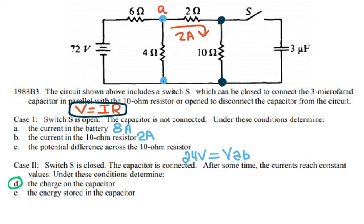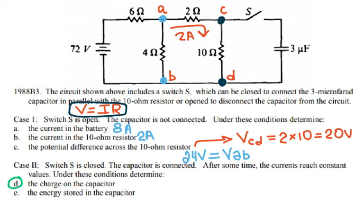Calling the capacitor terminals C and D, the voltage between C and D equals the voltage across the 10 ohm resistor, which is the current (2 amps) times the resistance (10 ohms) = 20 volts. When the capacitor is fully charged, the voltage across it equals 20 volts.